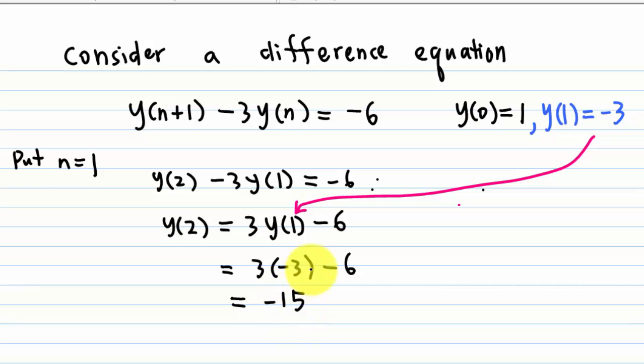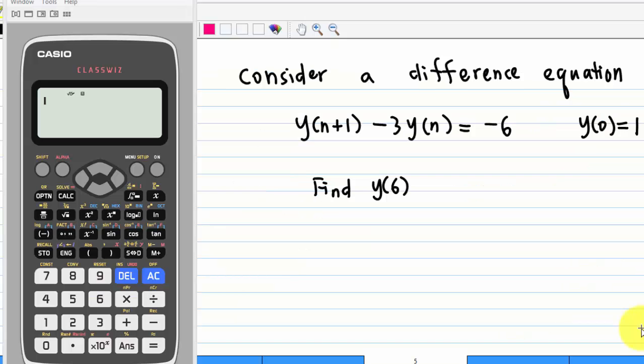We can continue this process. Eventually, you will find what is y(6). Now, let's use the Casio ClassWiz spreadsheet function.